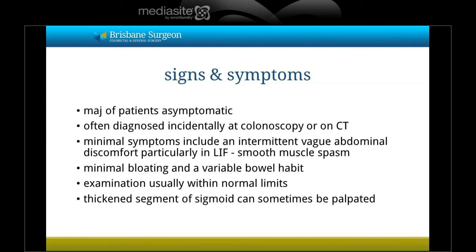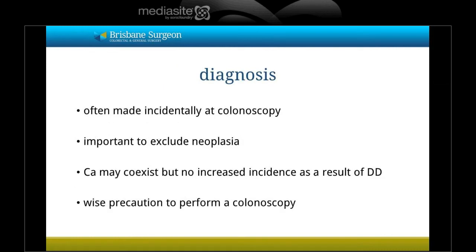The majority of patients have no symptoms from their diverticular disease, and it is often diagnosed incidentally at colonoscopy or on CT scan. Those who do experience problems tend to have minimal symptoms including intermittent vague abdominal discomfort, particularly in the left iliac fossa, thought to be due to bowel wall muscle spasm. Bloating and a variable bowel habit may also occur. On examination there is usually little to find, though in thin patients a thickened segment of sigmoid colon may be palpable. Diagnosis is made at colonoscopy, where it is important to exclude coexistent conditions such as bowel cancer, though there is no increased incidence of cancer in patients with diverticulosis.